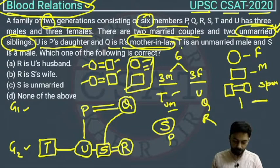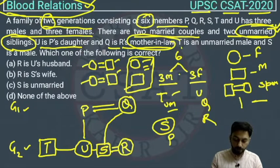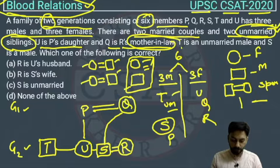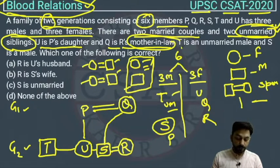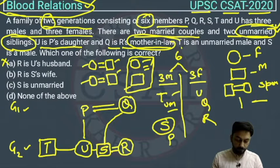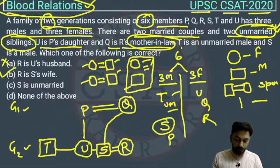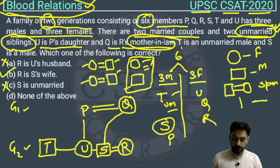So we can draw the complete diagram. It looks a bit tricky, but with 3 females, 3 males, and only 2 generations, the diagram can be determined. Now checking the options: Option A says R is U's husband — that is not possible because both R and U are female. Option B says R is S's wife — that is correct. Option C says S is unmarried — that is wrong, S is married. So the answer is option B.